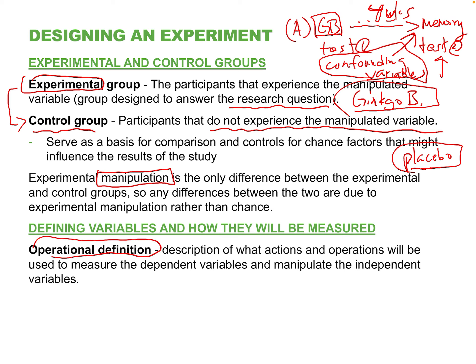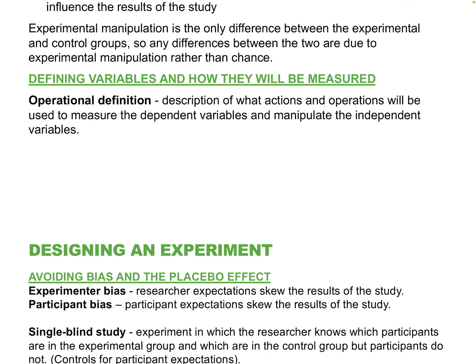Everything we study has to be defined. We have two variables: ginkgo and memory. How does the first affect the second? An operational definition is a measurement — how are we going to measure these variables? We'll talk about dependent and independent variables in a moment.